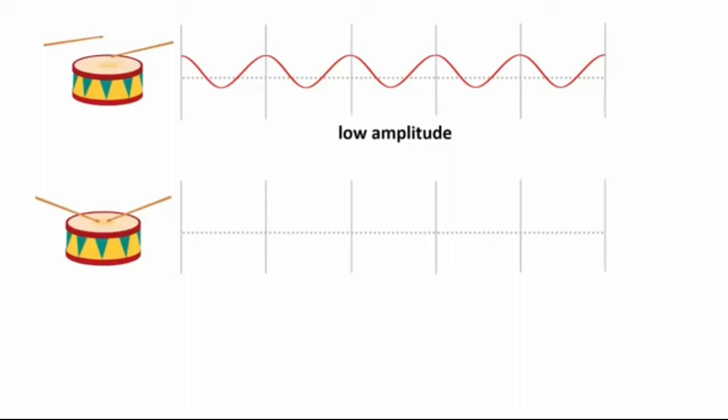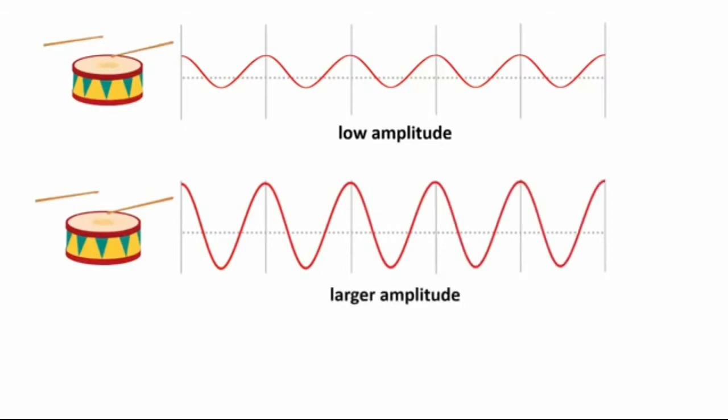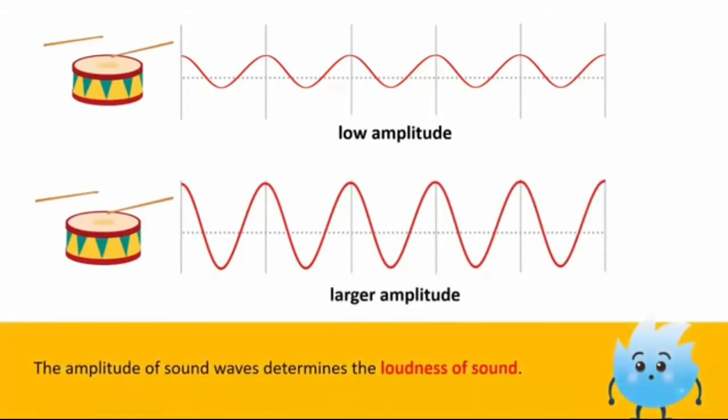However, if we strike the drum harder, we hear a louder sound. In this case, the sound waves have a larger amplitude. Hence, the amplitude of sound waves determines the loudness of sound.